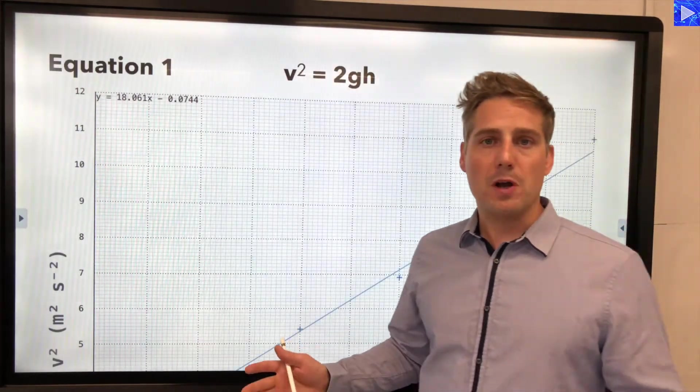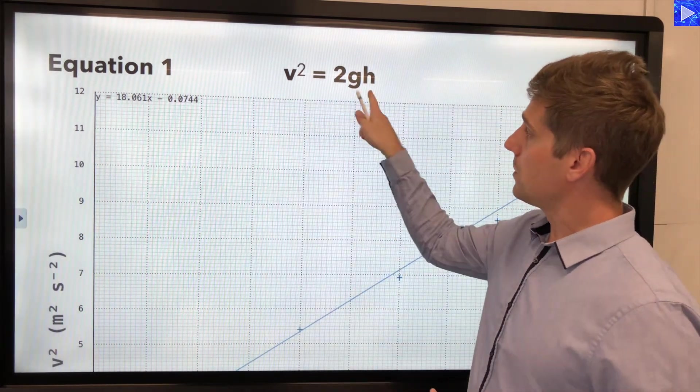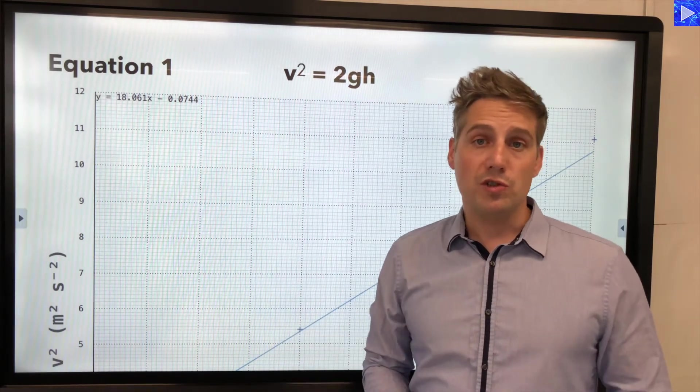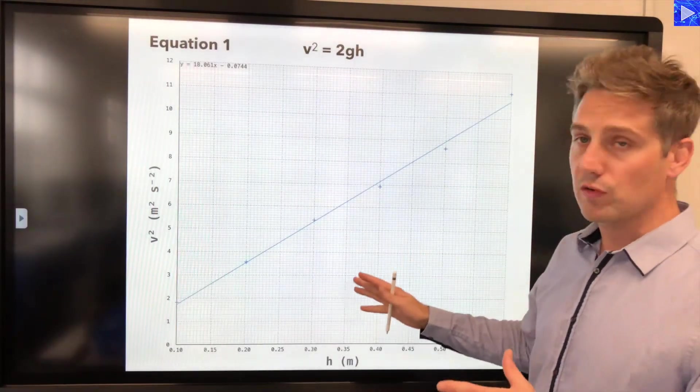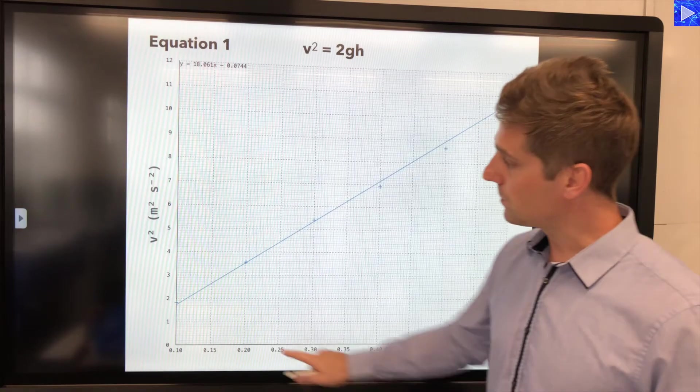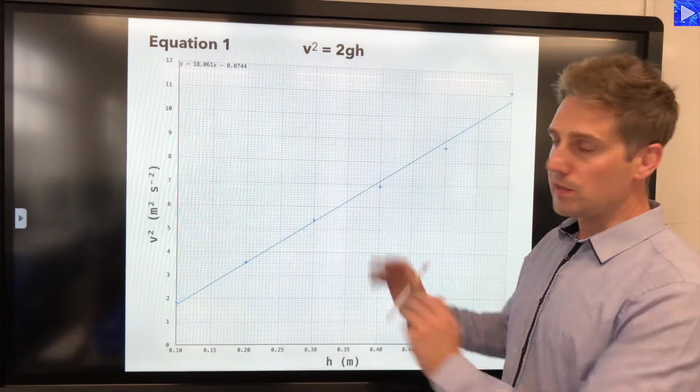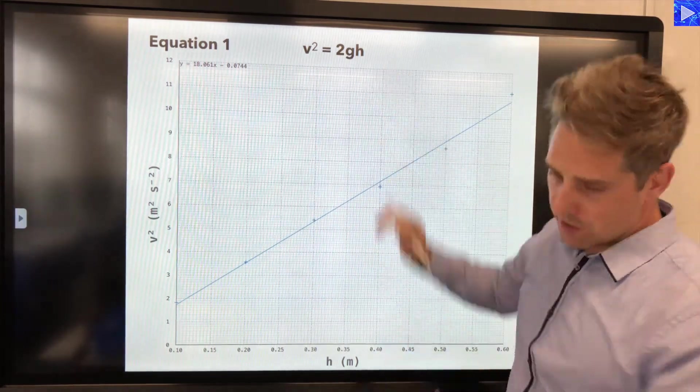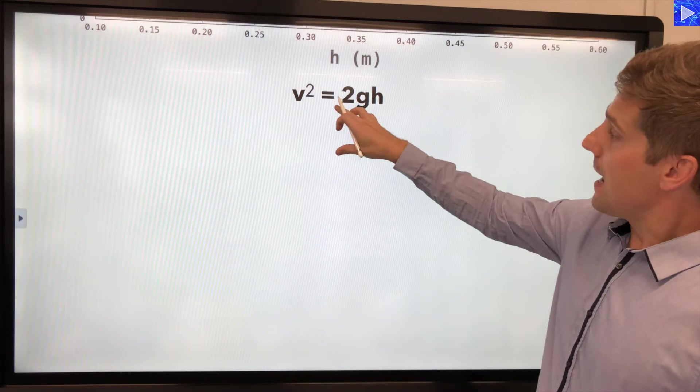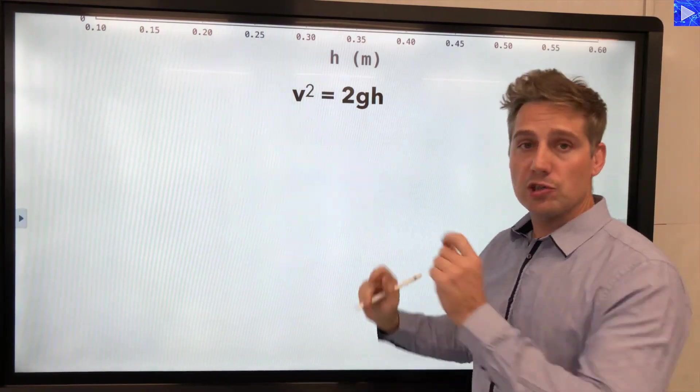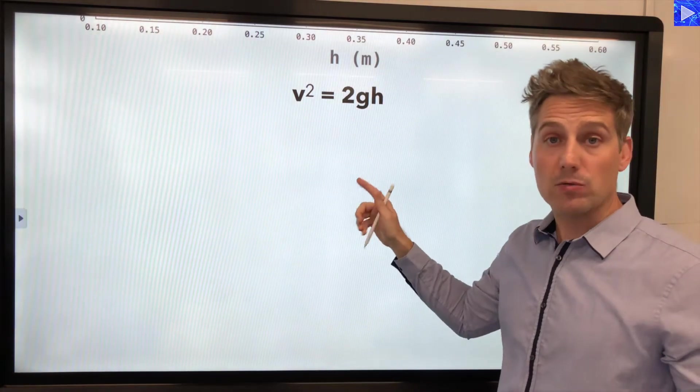So this was an experiment to determine the acceleration of freefall g. The equation related to the experiment was v squared equals 2gh. And this is the graph that was plotted with it. On this graph we had to plot h along the x axis and v squared along the y axis. So we're going to use that knowledge to analyze this graph. So here's our equation. I've written the equation down here again so I've got some space to work. I said we need to compare that equation to y equals mx plus c. So what you can do is just write y equals mx plus c in parallel to the equation you were given.